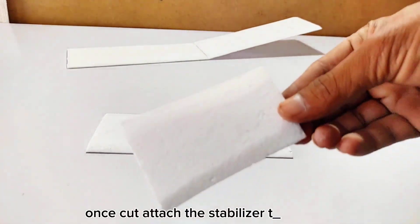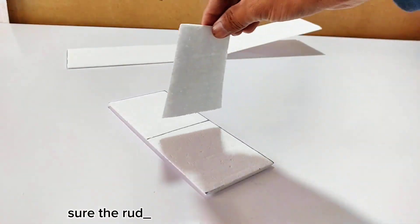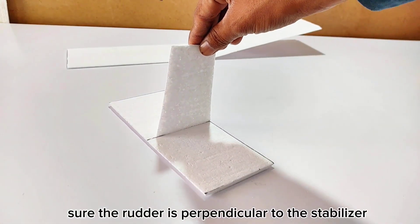Once cut, attach the stabilizer to the rudder, making sure the rudder is perpendicular to the stabilizer.